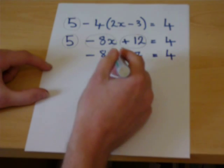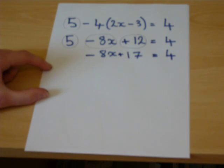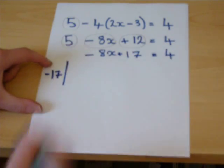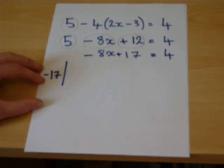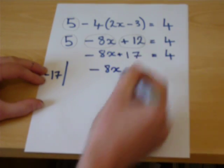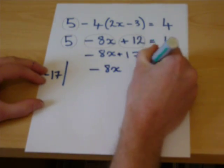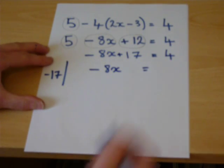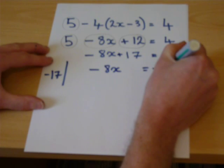We have a plus 17 now on the left-hand side. Let us subtract 17 from both sides. We are left with a minus 8x. The 17 is cancelled out. 4 take away 17, we know that to be minus 13.